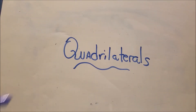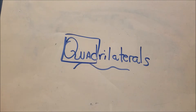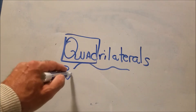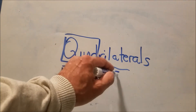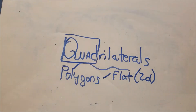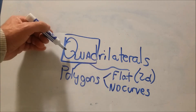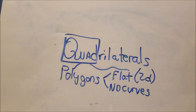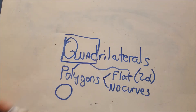Here's a video on quadrilaterals. The key word is 'quad,' meaning four — so quadrilaterals are four-sided figures. Quadrilaterals are also polygons. A polygon is any shape that's two-dimensional, flat, and has no curves. So a circle is not a polygon because it has curves, but a square and a triangle are polygons.